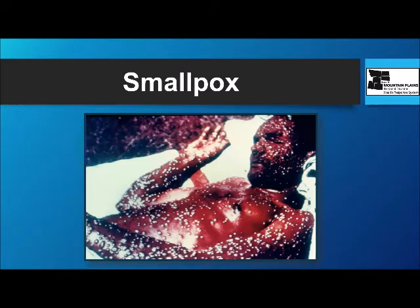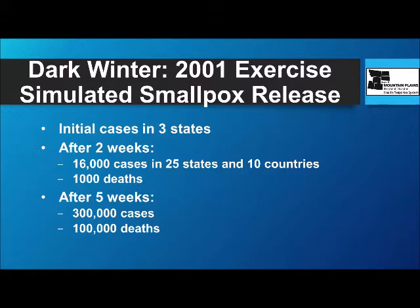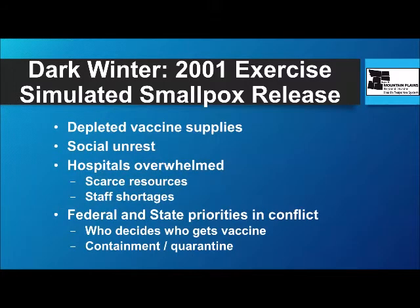Smallpox has been one of the most feared viral diseases. To give you an idea of how bad smallpox can be, this was an exercise conducted in 2001. Smallpox was released in three separate states. After two weeks, there were over 16,000 cases in 25 states and 10 countries, and 1,000 deaths. After a little over a month, there were 300,000 cases and 100,000 deaths. The available vaccine supplies would have been depleted, there would have been significant social unrest, and the healthcare system was completely overwhelmed.